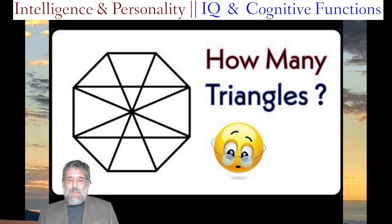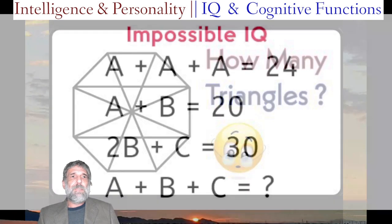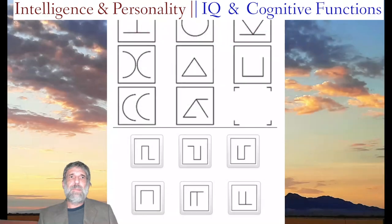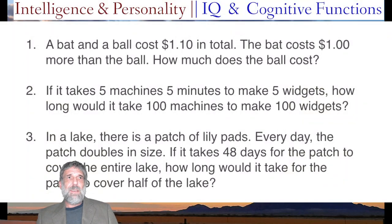So what do IQ test questions look like? Here's one: how many triangles? You can see there are a couple of rhombuses in here — those aren't triangles — but you've got to add up the bigger triangles as well as the small ones. And this question — I did this one just to see what I got: I got 26. Eight plus eight plus eight equals 24; eight plus twelve equals 20; twenty-four plus six equals 30, so that must be 6. These other kinds of questions I have no idea about — I'm terrible at them — and this will all link back to cognitive functions soon.